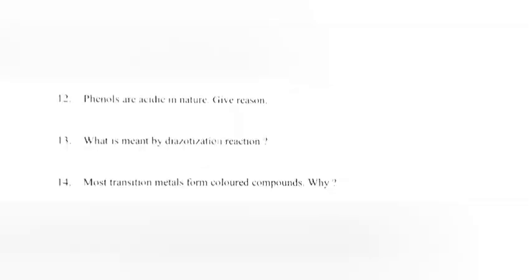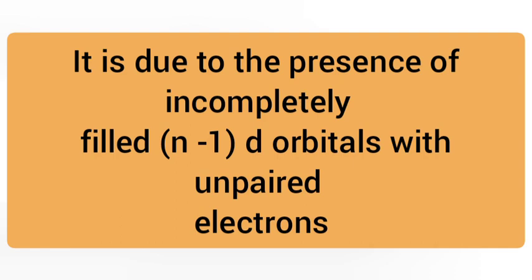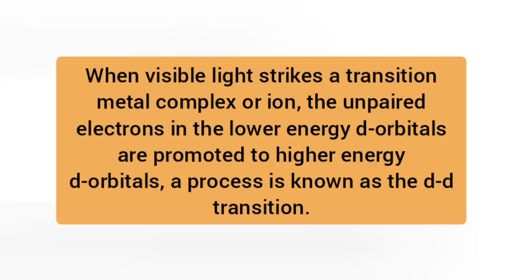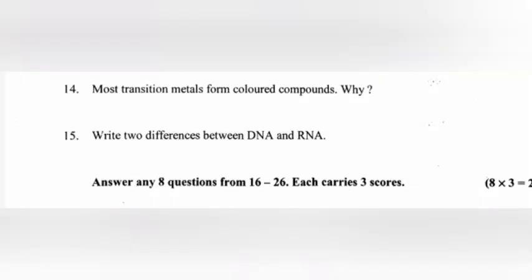Question 14: Most transition metals form colored compounds. Why? Answer: It is due to the presence of incompletely filled d orbitals with unpaired electrons. When visible light strikes a transition metal complex or ion, the unpaired electrons in the lower energy d orbital are promoted to higher energy d orbitals, a process known as d-d transition.